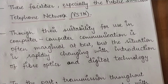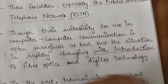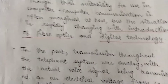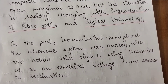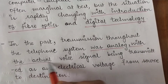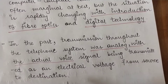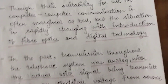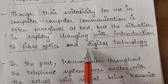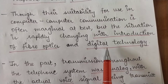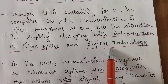But the situation is rapidly changing with the introduction of fiber optics and digital technology. In the past, transmission throughout the telephone system was analog, with the actual voice signal being transmitted as an electrical voltage from source to destination. There was no digitization of the telephone system — all data was sent as analog signals. But with the advent of fiber optics, digitization is taking place in telephone networks.